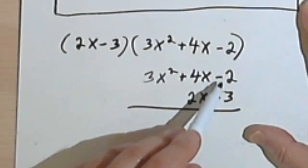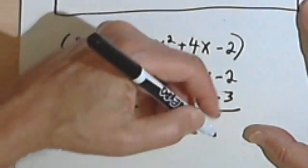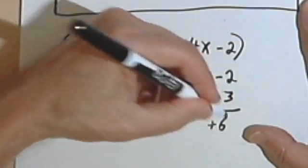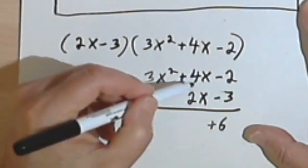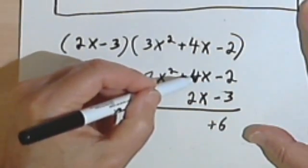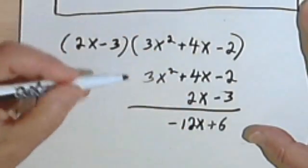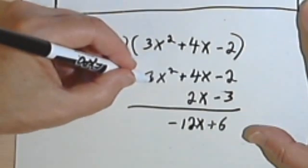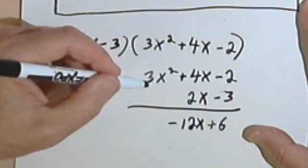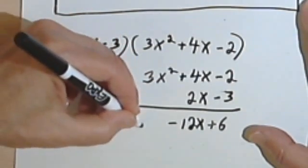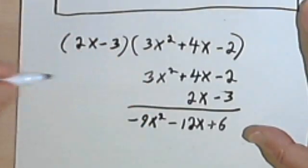Here's how it goes: negative 3 times negative 2 is a positive 6. Negative 3 times 4x is negative 12x, and negative 3 times 3x squared will be negative 9x squared.